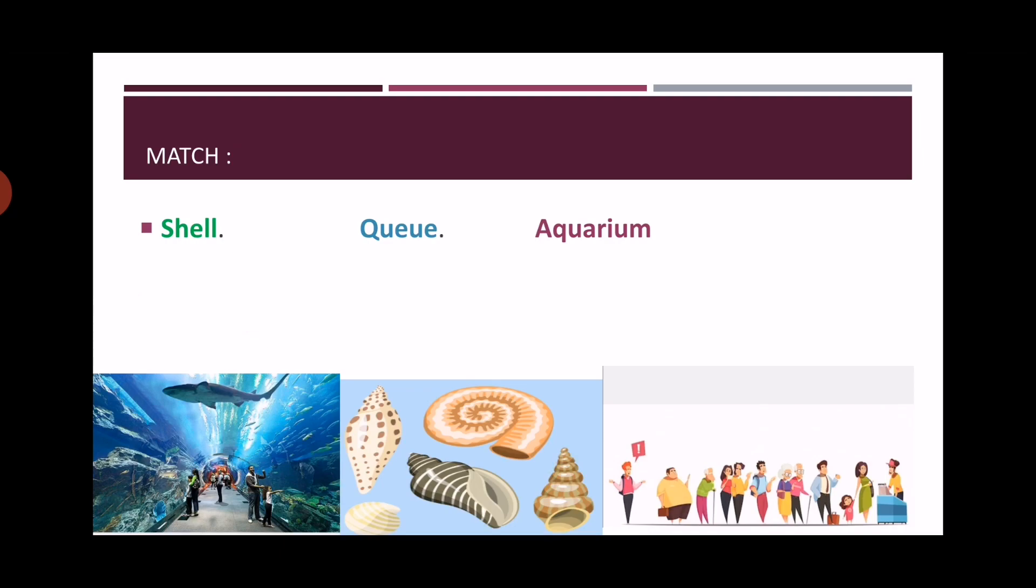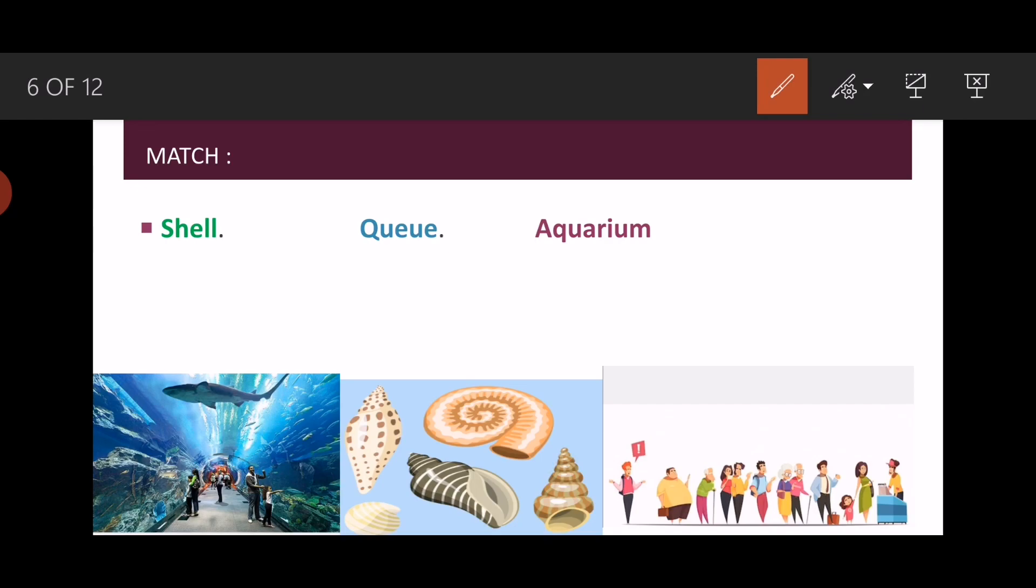Now let's move to the next slide. Here we have the word shell. What is the picture that illustrates the word shell? Yes, this is it, because it means the hard outer covering of something. Now queue, what is the word that means a line of people who are waiting there, who are awaiting their turn? Fabulous, this is it. Aquarium means a place that holds sea creatures or preserves sea creatures. Yes, this is it. Great job, you're fantastic.